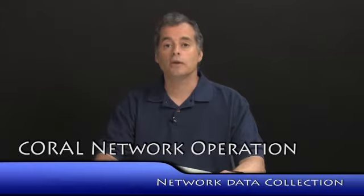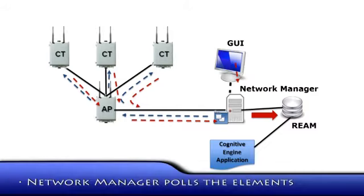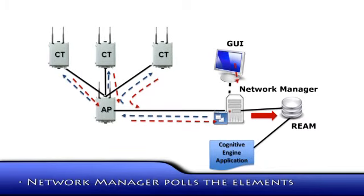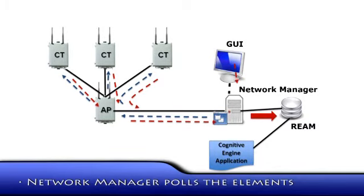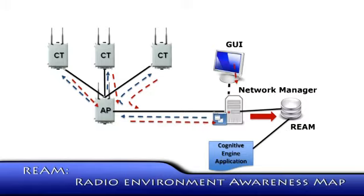Let me now quickly go over the operation of the network management station and the cognitive engine in a very simplistic network made of one access point and three clients. Periodically, the network management station will poll the different nodes in the cognitive radio network and retrieve their interference information and store it in the REAM database — the Radio Environment Awareness Map.